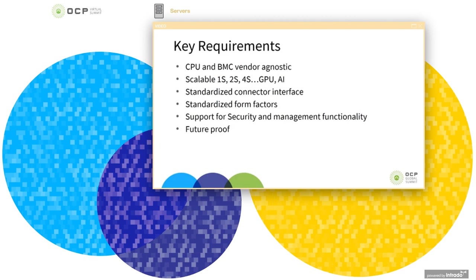Going over some key requirements: the spec aims to be CPU as well as BMC vendor agnostic. It is scalable across multiple sockets as well as GPU and AI-based systems. The signals across the connector interface are standardized, and the form factors supported are standardized. It supports security and management functions, and it attempts to be future-proof using reserved signals as well as by allowing for future expansion of signals via the serial GPIO interface.